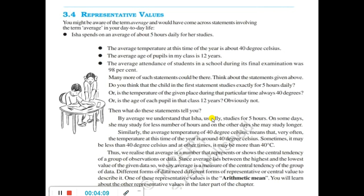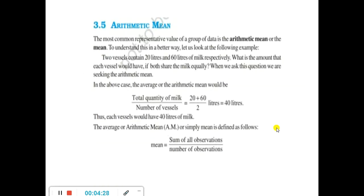The most common representative value of a group of data is the arithmetic mean, or simply the mean. For example, a person can study 2 hours one day, 3 hours another day, or 5 hours the third day — but when we calculate the average, we find the central value across all days. To understand arithmetic mean, let us look at the following example.